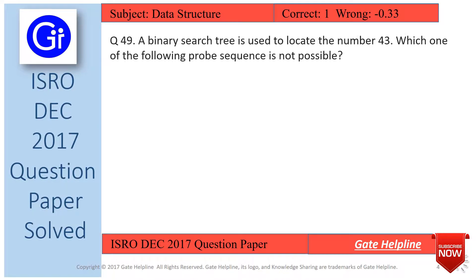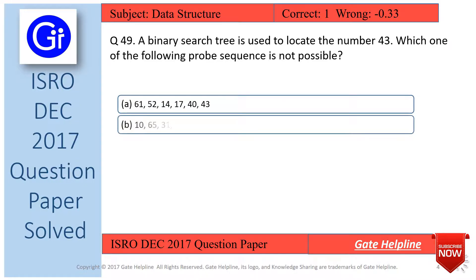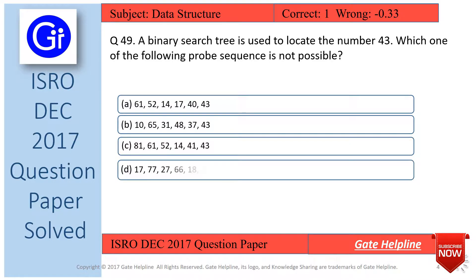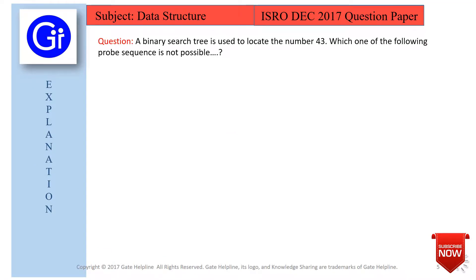Question number 49: A binary search tree is used to locate the number 43. Which one of the following probe sequences is not possible? The options are A, B, C, and D. We'll now see the explanation to this question — a binary search tree is used to locate number 43, and we need to find which probe sequence is not possible.